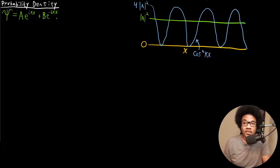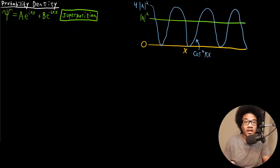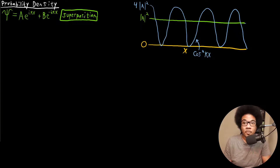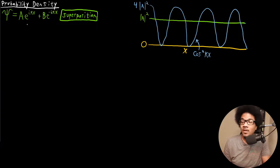This wave function is constructed as what we call a superposition. A superposition is just a fancy way of saying a linear combination of functions — basically, you don't have a single function, you have a sum of multiple different functions. We'll talk more about this property in detail in a later lecture.